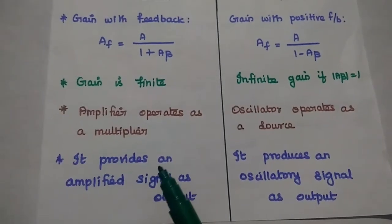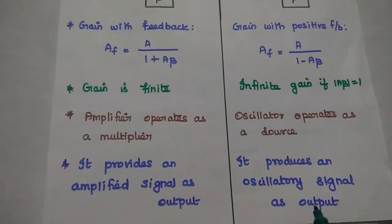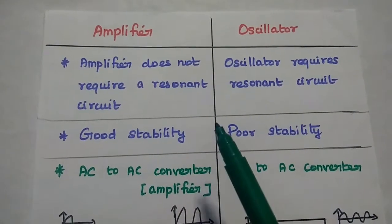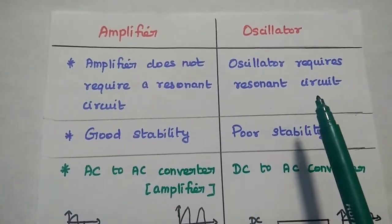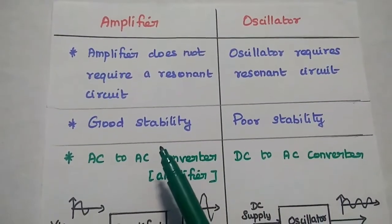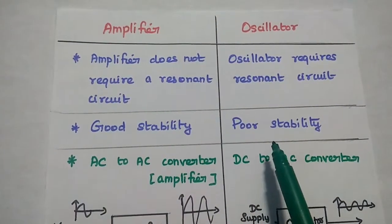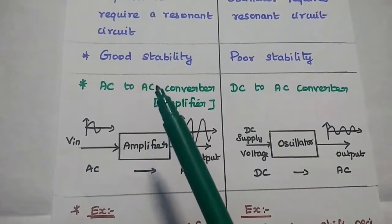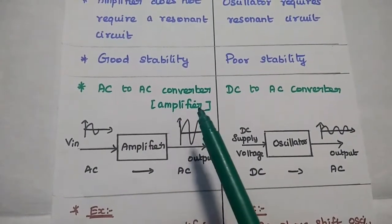An amplifier provides an amplified signal as output. An oscillator produces an oscillatory signal as output. An amplifier does not require any resonant circuit for its operation, whereas an oscillator requires a resonant circuit to generate the signal. As we know, the amplifier has finite gain and good stability. The oscillator has poor stability.